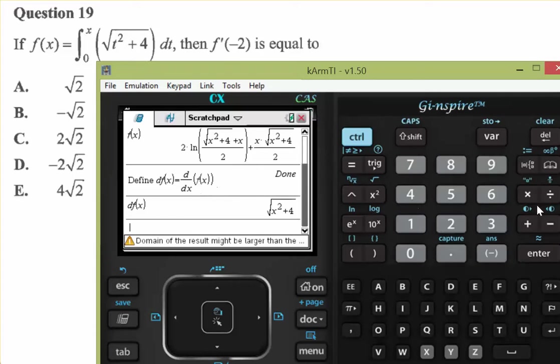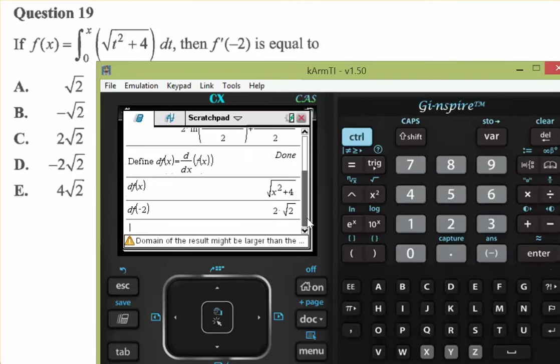Anyway, we can work out df of 2, the derivative... Sorry, of negative 2. And we get 2 root 2. So we know the answer is c.